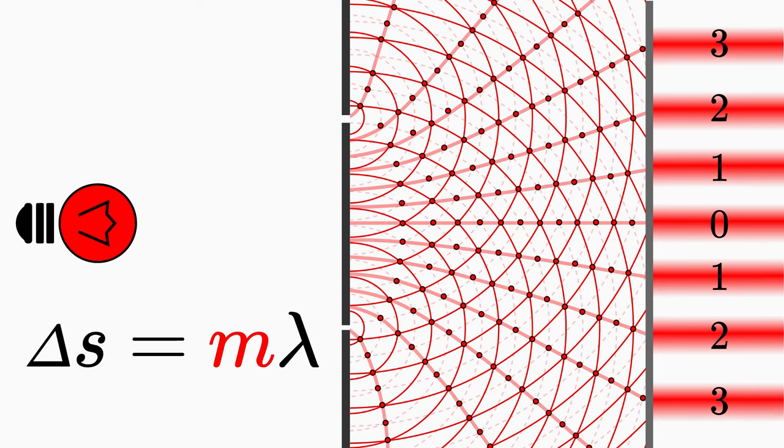Now you understand where this numbering of the fringes comes from, namely from the number m, which indicates how large the path difference of the interfering waves is.